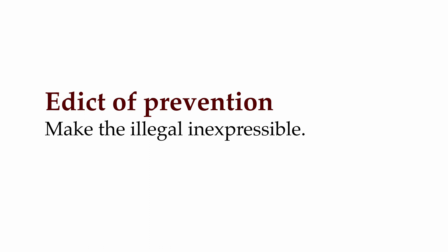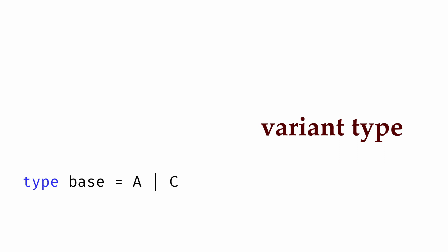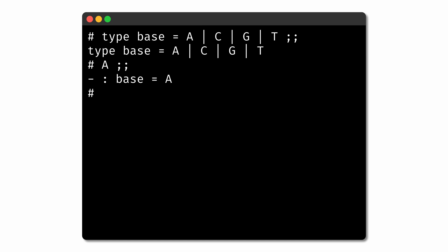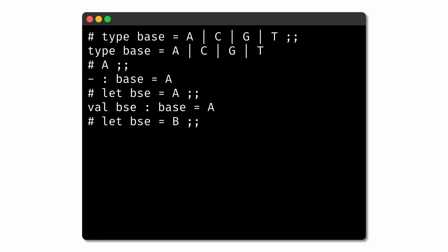We can do that through what's known as a variant type, where we define a new type by a set of different ways to construct that type. Instead of using a string for a DNA base, we can define a new type called base with four different value constructors, one for each of the base letters. These value constructors represent four different ways to construct values of type base, and the vertical bars separate the alternatives from each other. If we enter this into the OCaml REPL, we can use any one of these value constructors to express a value of type base. Notice that now the illegal is inexpressible — there's no way to define a value of type base that isn't a valid base. If we use anything other than one of the four value constructors, we'd get an error.